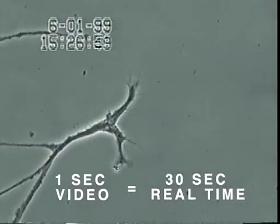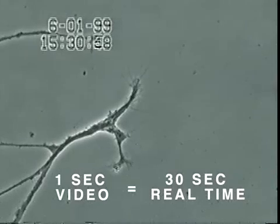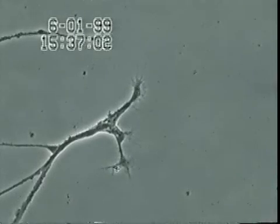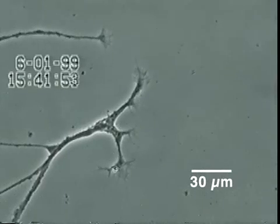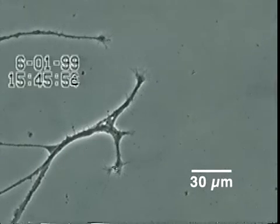In this experiment, neurons also isolated from snail brain tissue were grown in culture for several days, after which very low concentrations of mercury were added to the culture medium for 20 minutes.